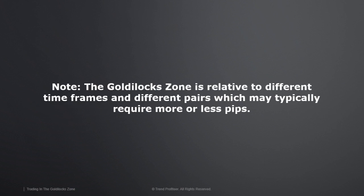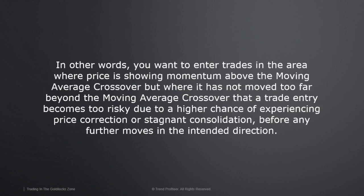For example, a five-minute or fifteen-minute time frame is going to require fewer pips to be considered too far away from the crossover. You can have it set to just one pip above, or even right on the fast moving average, as the too-close level. On the other side, if you're looking at four-hour trades, you can allow more pips for that Goldilocks zone. You want to enter trades where price shows momentum above the moving average crossover, but has not moved so far beyond it that entry becomes too risky due to a higher chance of price correction or stagnant consolidation.